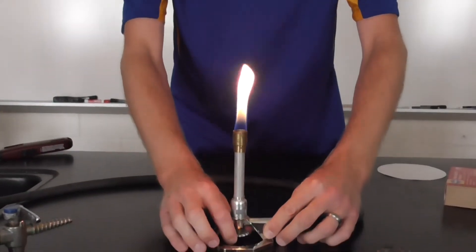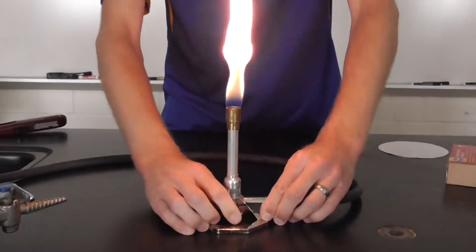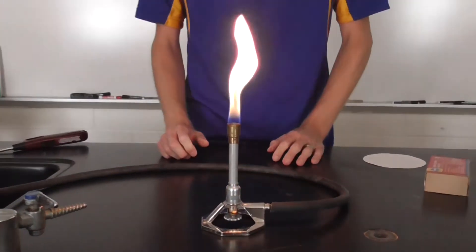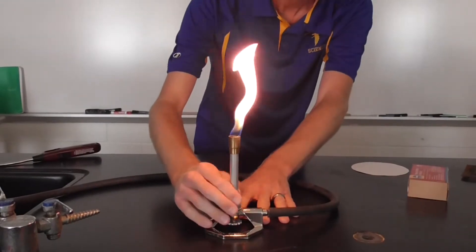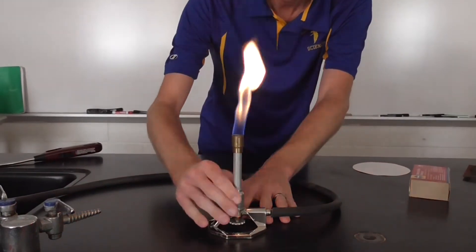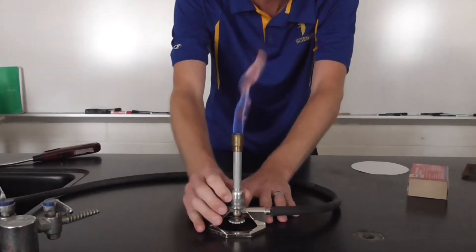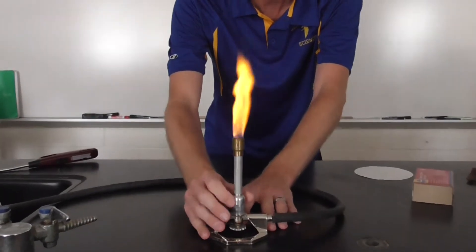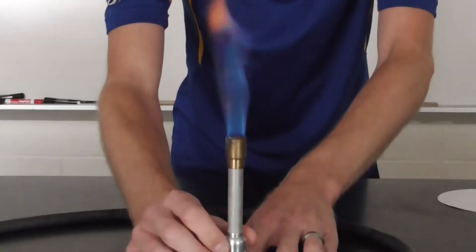So we need to have the gas adjusted properly by adjusting the screw. And we need to turn the barrel to allow for air to come in. Now remember what we're trying to achieve. We're trying to produce a flame that has both an inner cone and an outer cone.